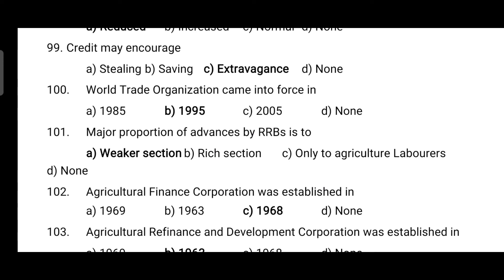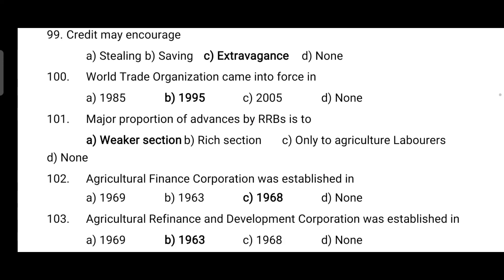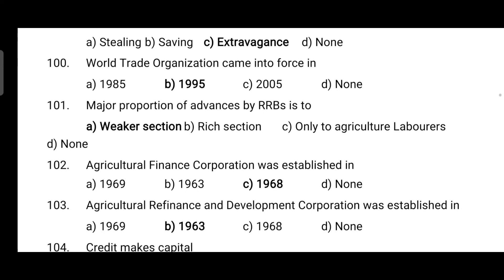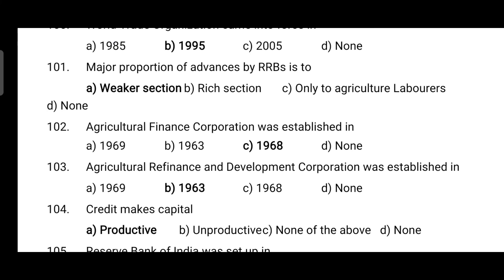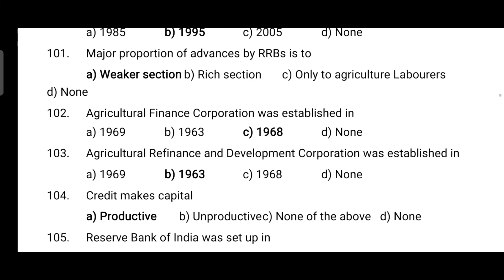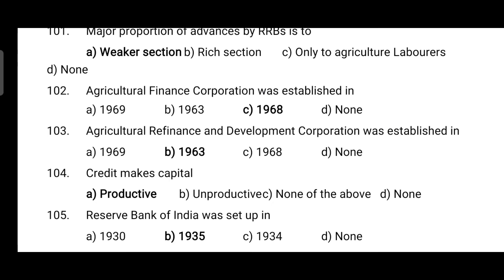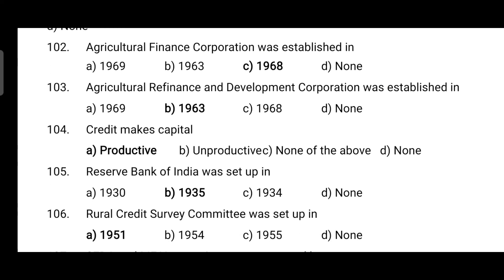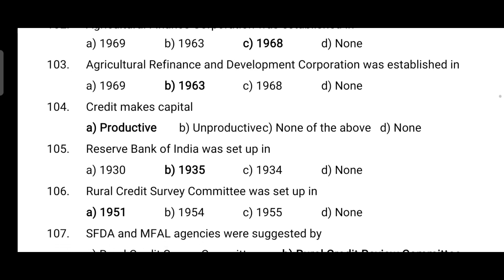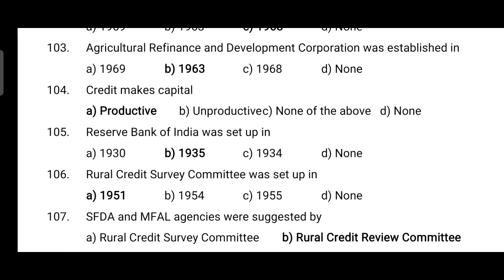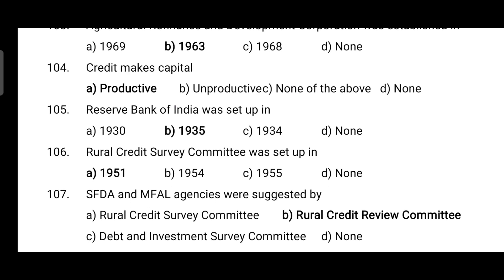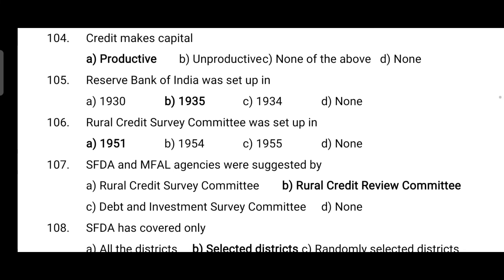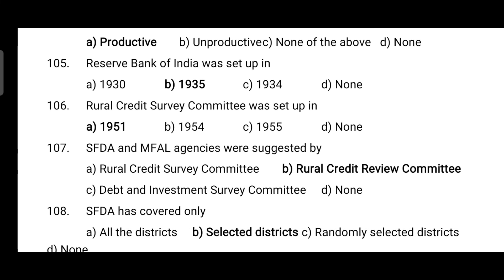The Agriculture Finance Corporation was established in 1968. The Agriculture Refinance and Development Corporation was established in 1963. Credit makes capital productive. The Reserve Bank of India was set up in 1935. The Rural Credit Survey Committee was set up in 1951. SFDA and MAFL agencies were suggested by the Rural Credit Review Committee (RCRC). SFDA has covered only selected districts.